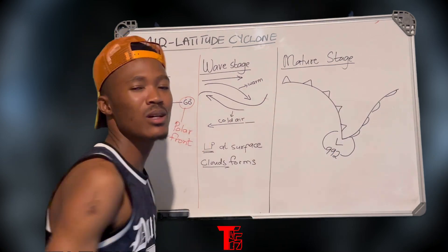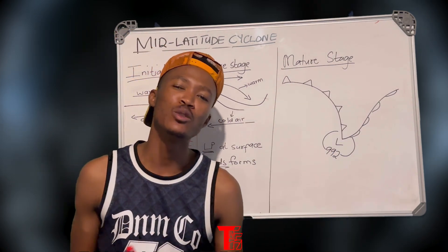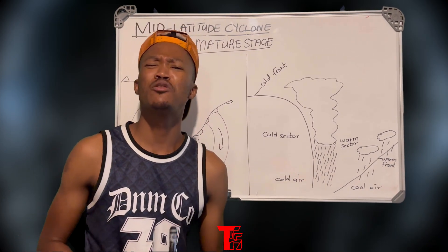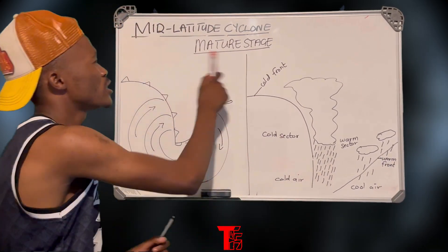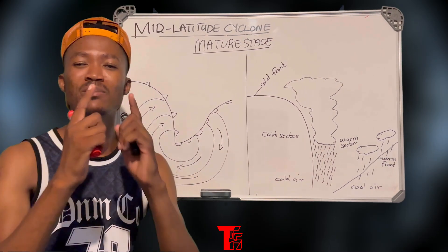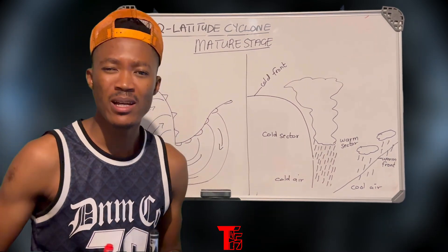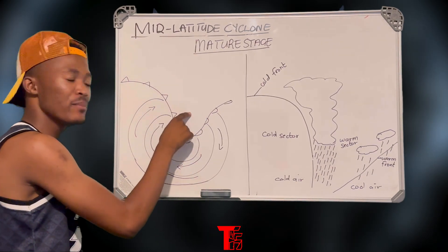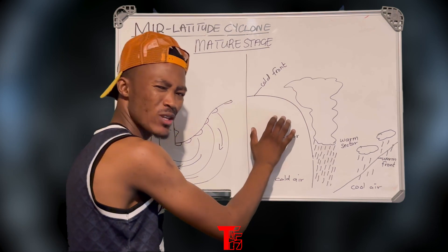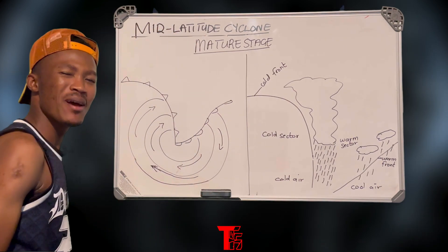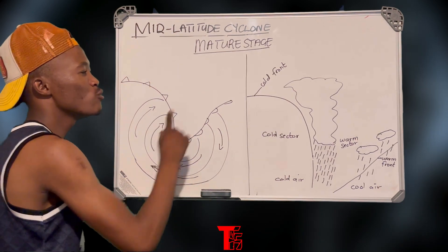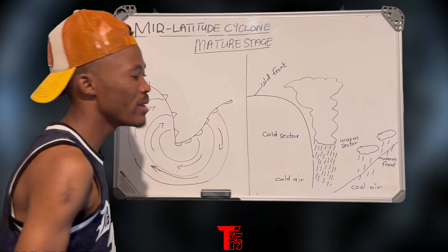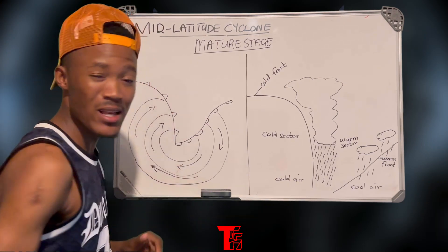Now let us look at the mature stage of the mid-latitude cyclone. These two diagrams show the same stage: one shows the plan view of the mature stage, and the other shows the cross section of the mid-latitude cyclone. Please make sure that you note the difference between these two diagrams — both of them represent the mature stage.